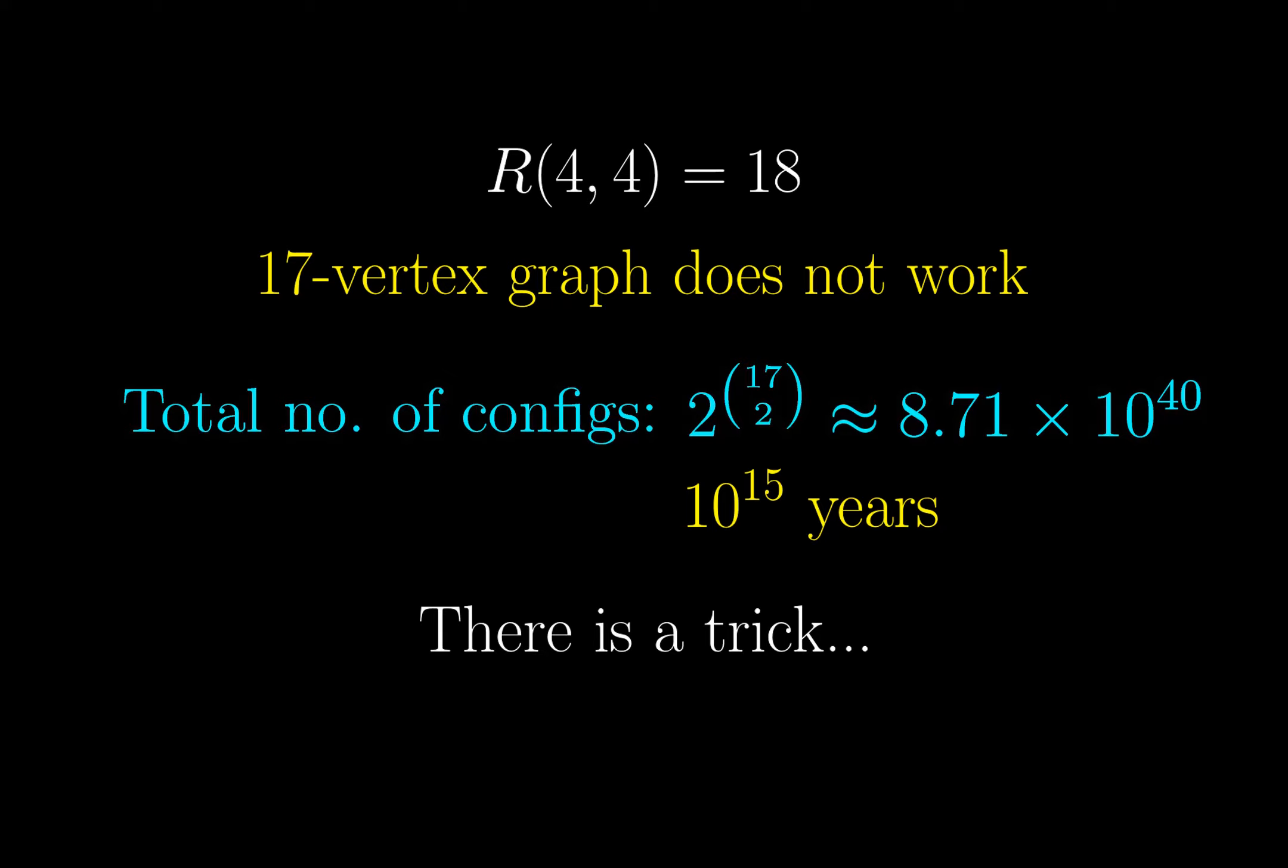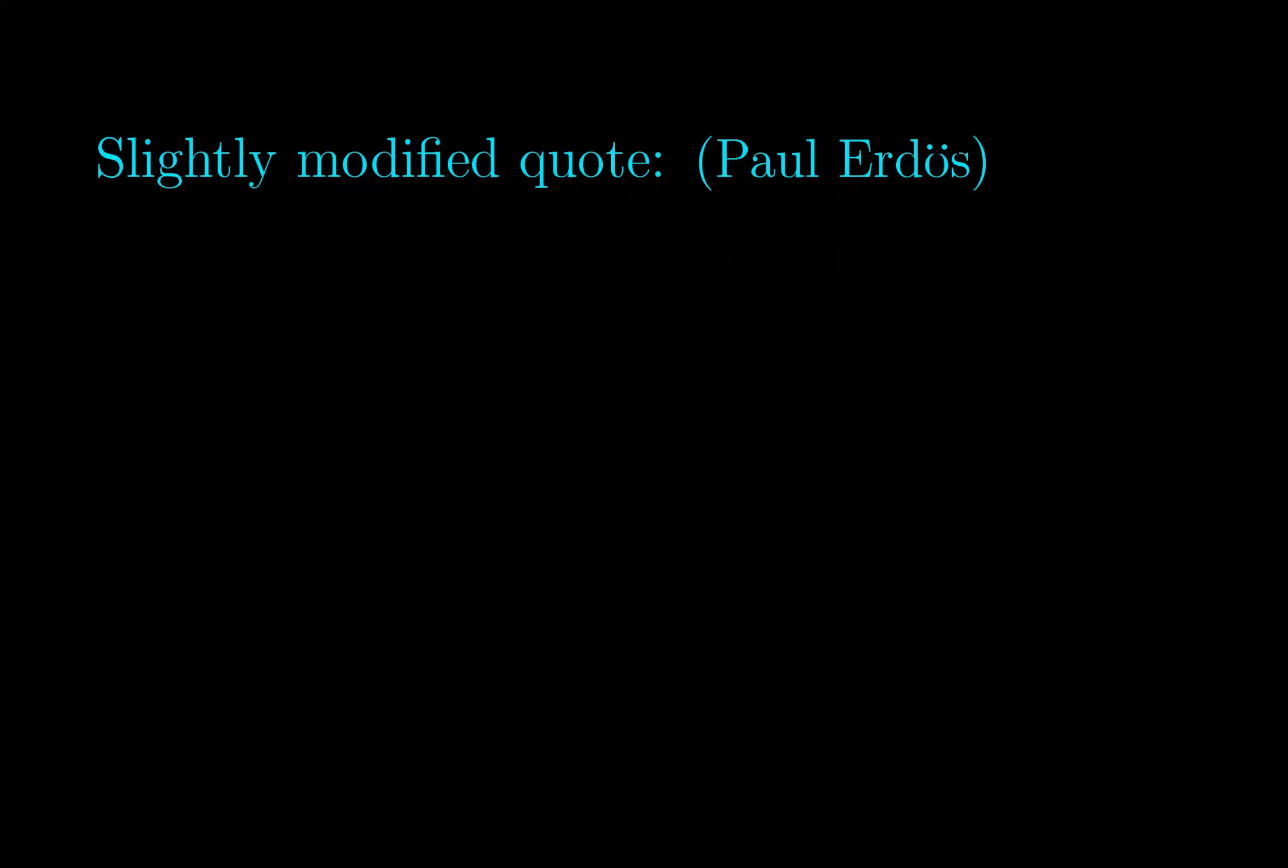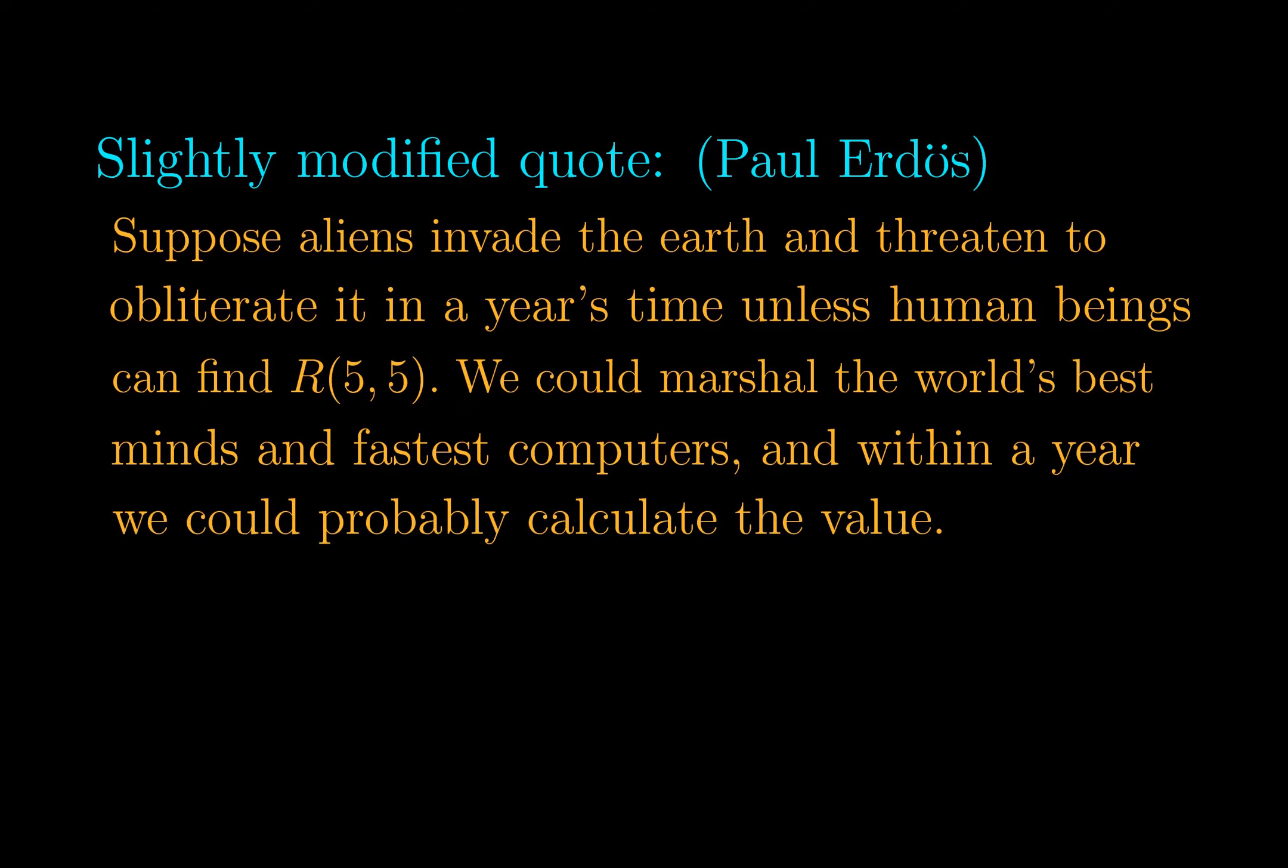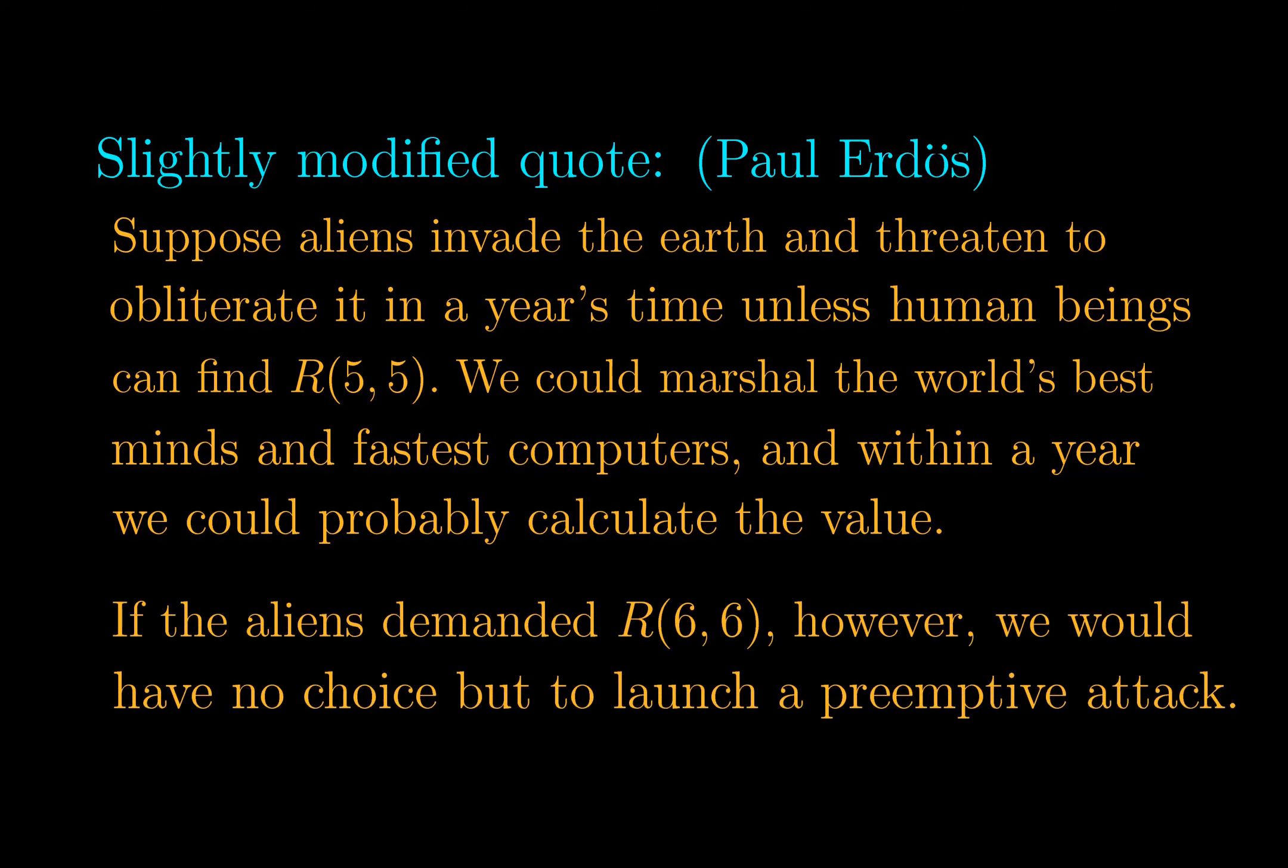It is a natural question to ask about R(5,5), or even R(6,6). The answer is, we don't know, and it is possibly best famously summarized by Paul Erdos. Here, we slightly modify the wordings. Suppose aliens invade the earth and threaten to obliterate it in a year's time, unless human beings can find R(5,5). We could marshal the world's best minds and fastest computers, and within a year, we could probably calculate the value. If the aliens demanded R(6,6), however, we would have no choice but to launch a pre-emptive attack. This just illustrates how difficult it is to calculate R(5,5) and R(6,6).